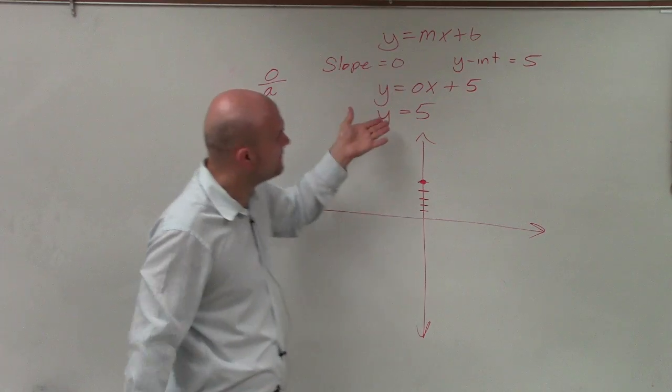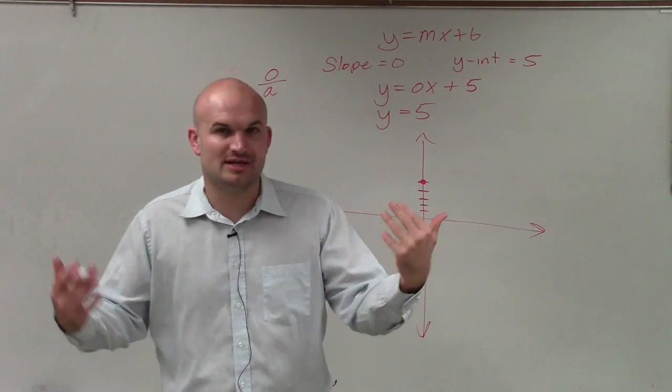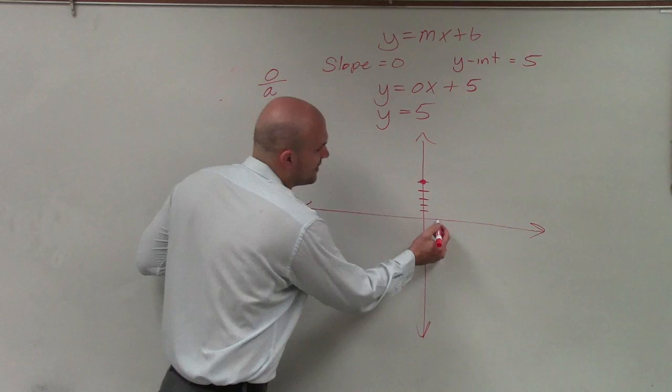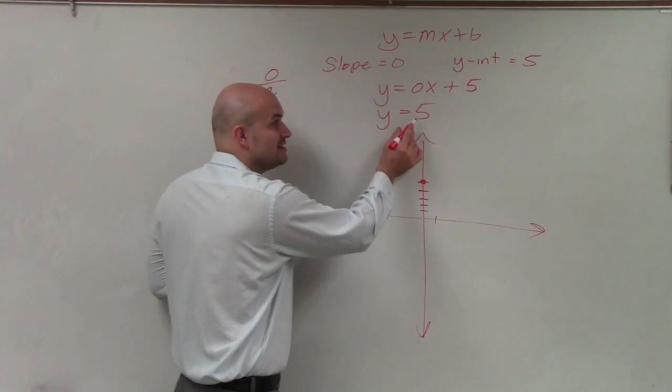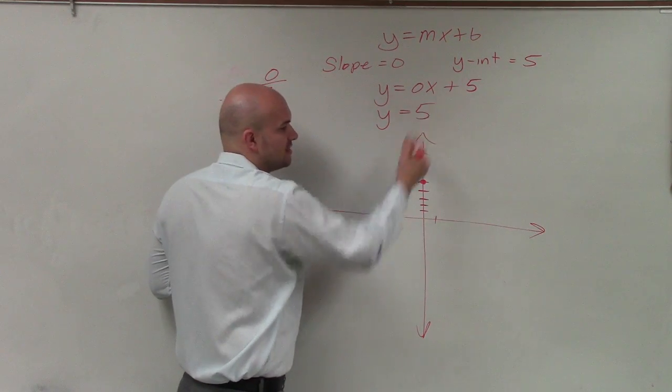So the best way I like to think about this is looking at a table of values. If I say, what if x is 1? Well, since there is no x in the equation, y is always going to be 5.